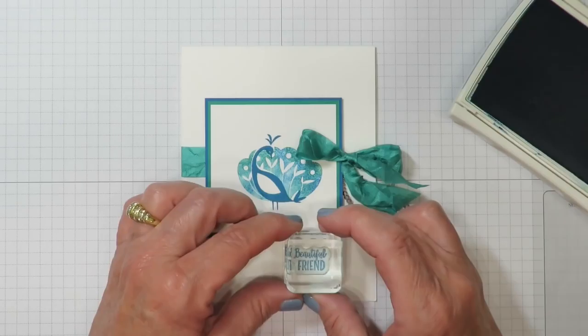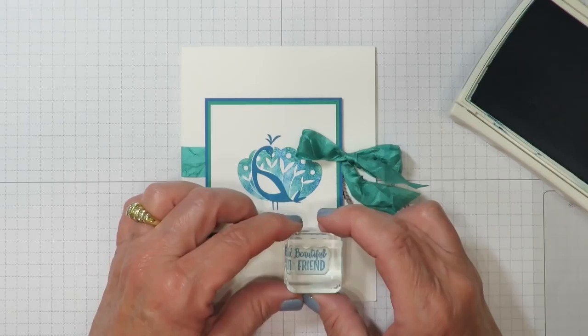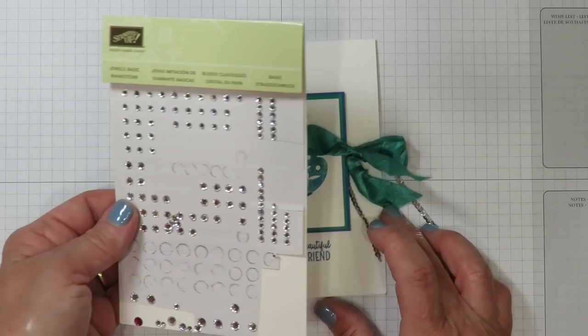I've pulled out the words from that same stamp set that's a beautiful friend and I'm using the Pacific Point ink just so what the color will coordinate and I'm going to stamp that here underneath the image.